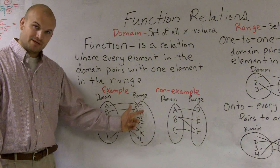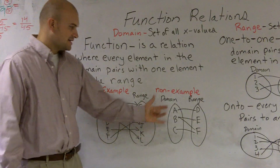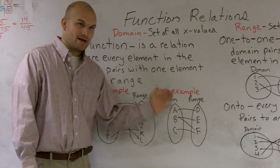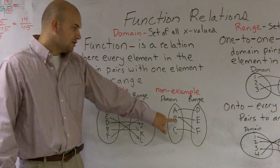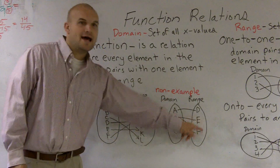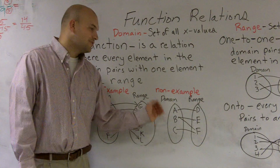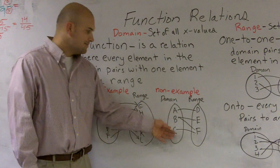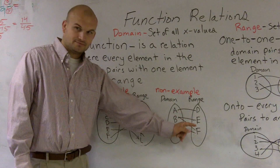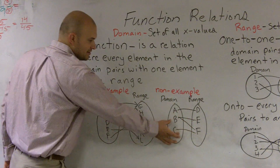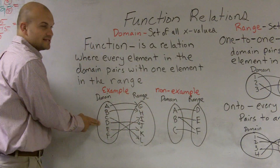It is paired with one element in the range. A non-example of a function: you have a domain and a range — it doesn't matter how many elements are in each. What you notice is letter b goes to e and it also goes to f, therefore this is not a function because you have an element in the domain that goes to two different elements in the range. There's a big difference between going to two elements versus exactly one.